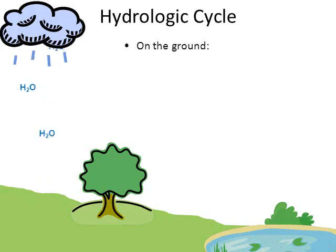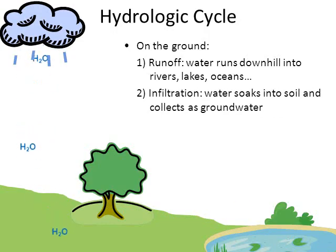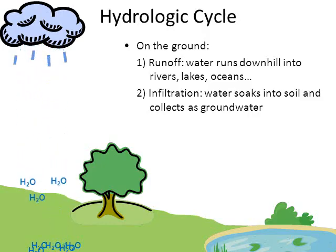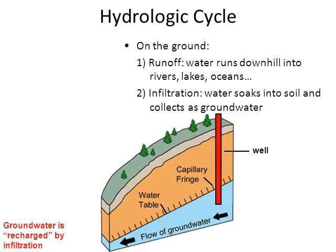Once water is on the ground because of precipitation, one of two things will happen. Either it will run off downhill into a river, lake, or ocean — that's called runoff. Or the water will soak into the soil, which we call infiltration. When water soaks into the soil, it collects underground in a big pool called groundwater, which is where a lot of the world gets its drinking water. We drill wells down into that groundwater and pump it out. The groundwater is recharged because of infiltration — if water didn't seep back into the groundwater, we'd run out.